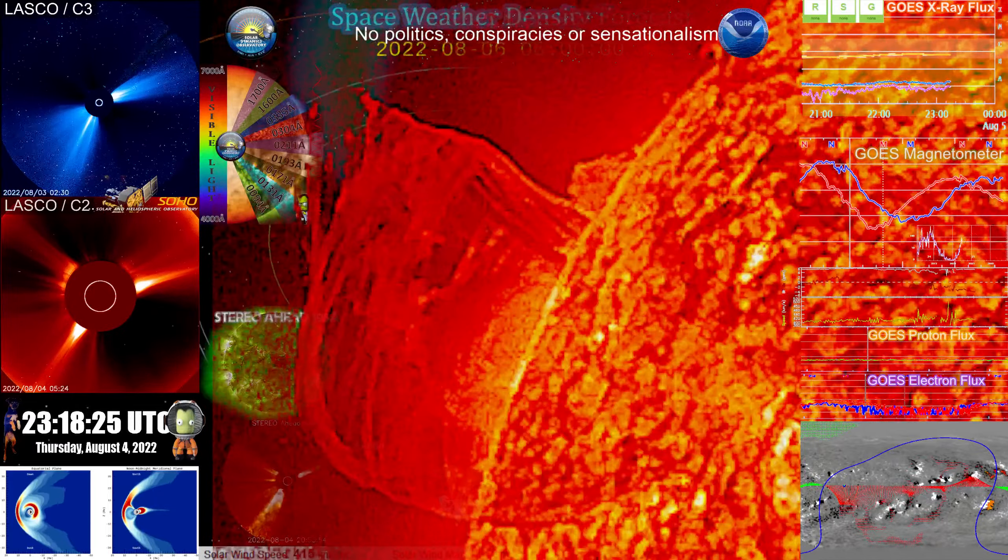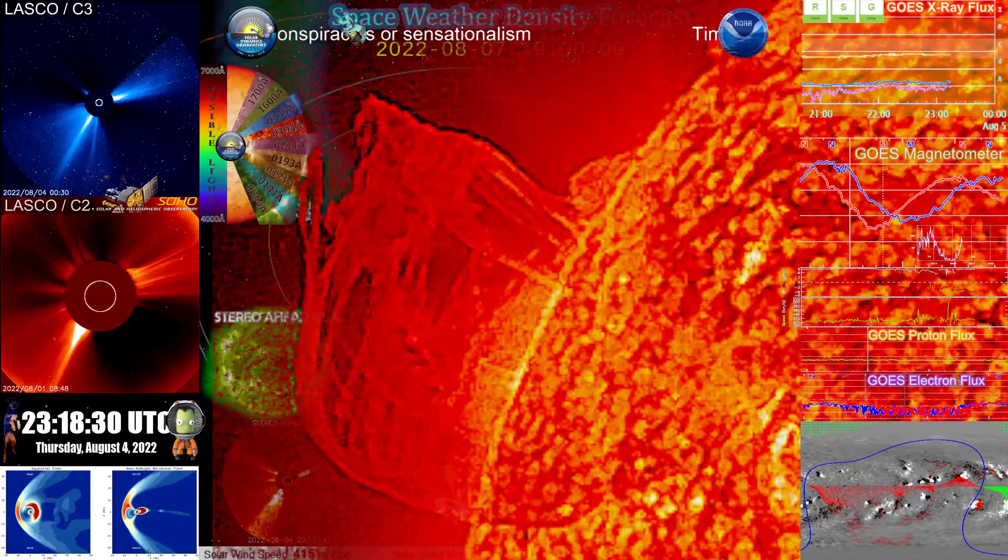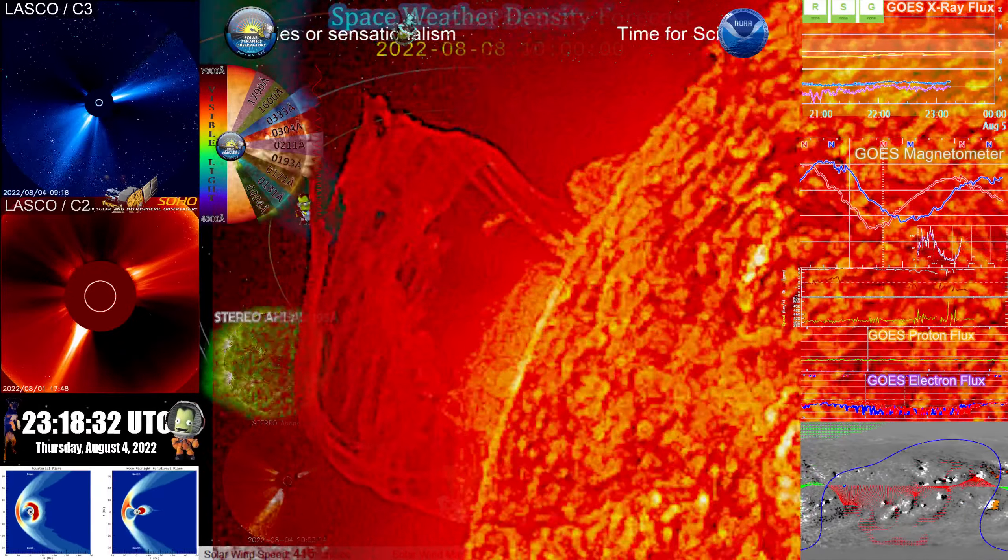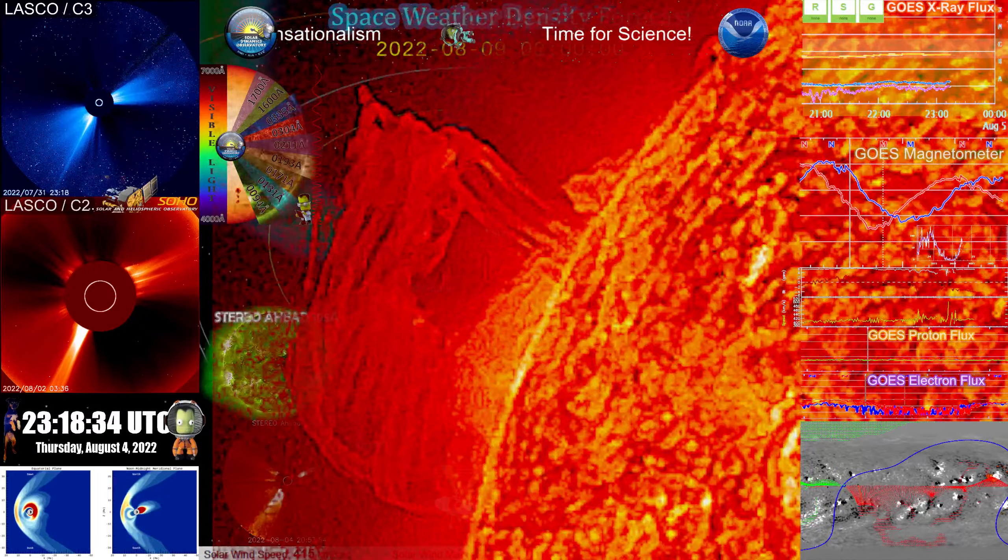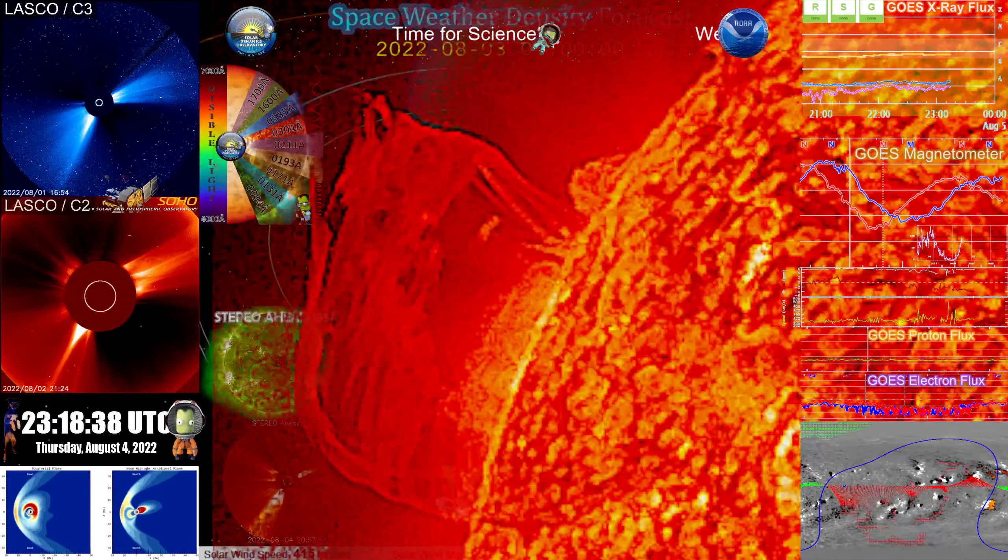And should this event occur or happen, we will see all satellites impacted. It will cause an immense amount of satellite drag when it does impact Earth. It will cause satellite loss.